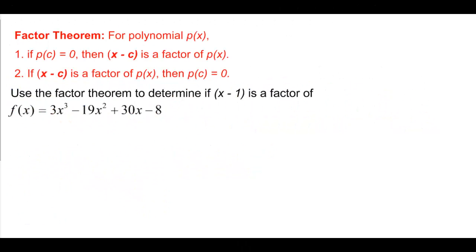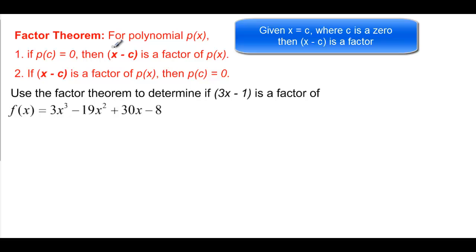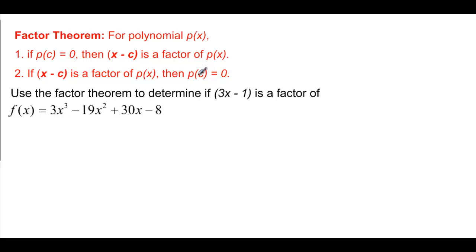Now we talk about the factor theorem. If we have the same polynomial P of X, then if we can find P of C equal to 0, then that would mean that X minus C would become a factor. If you know what C is, you could make it X minus that C, and you've got a factor. Or if you know that X minus C is a factor, then when you plug in the C value into your polynomial, you should get a remainder of 0.